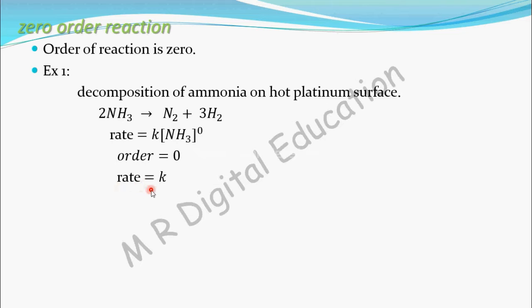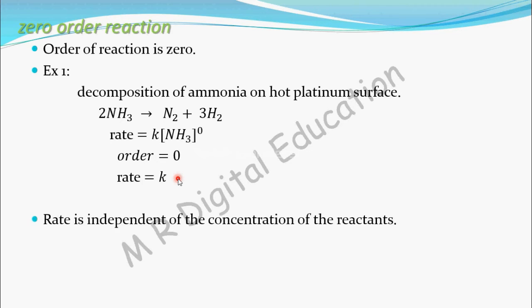This equation does not contain a concentration term. So the rate, or speed, for a zero-order reaction is independent of the concentration of the reactants. Independent means whatever the concentration may be — 2 mol, 3 mol, or 4 mol of the reactant — the rate of the reaction always remains the same.